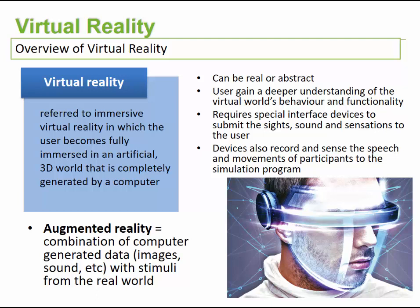We would need a special interface device that allows us to see the environment, hear the sounds, and record our interactions with it — for example, where we're moving our head, where we're looking, and what we're saying. On the opposite side we have augmented reality, which is a combination of computer-generated data — images, sound, or text — placed on top of the real world, enhancing what we currently see by providing additional information.